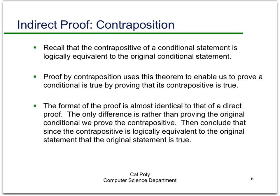If you recall, if the original statement is P implies Q, then the contrapositive is not Q implies not P. So proof by contraposition works by using this theorem, that the conditional statement and its contrapositive are logically equivalent, to show that the original statement is true by proving that its contrapositive is true.